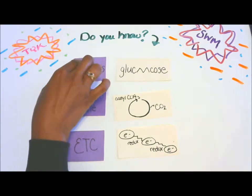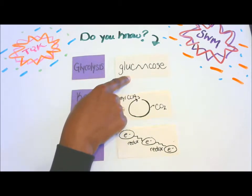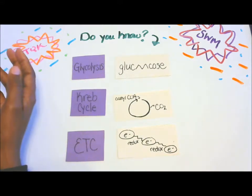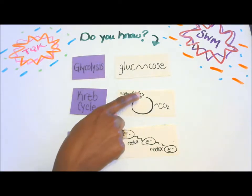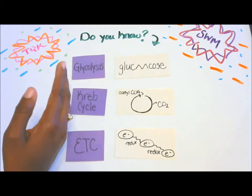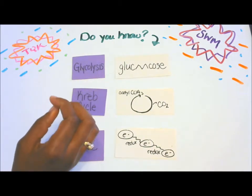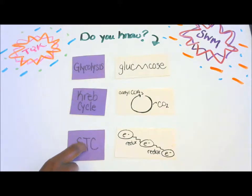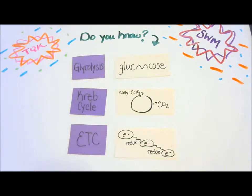Glycolysis is the oxidation of glucose to give us pyruvic acid, a couple ATPs, and NADH. The Krebs cycle is the oxidation of acetyl-CoA, which gives us carbon dioxide, ATP, NADH, and FADH2 — those are our reduced electron carriers. These reduced electron carriers then go to the ETC, the electron transport chain, which is the cascade of redox reactions. This energy is used to generate ATP.